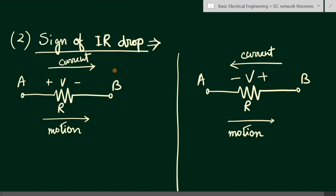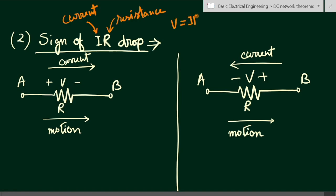Now let us see the sign of IR drop. IR drop means I is the current and R is the resistance. Current into resistance gives voltage because from Ohm's law we have V equal to IR. So this is as per Ohm's law, and we will find out the sign of IR drop across a resistance.